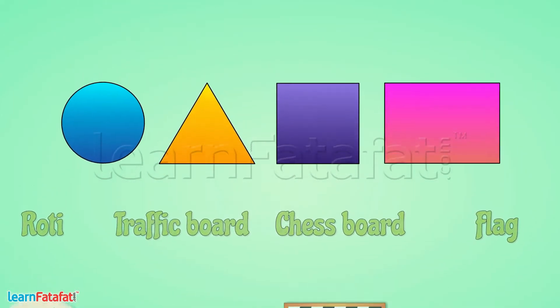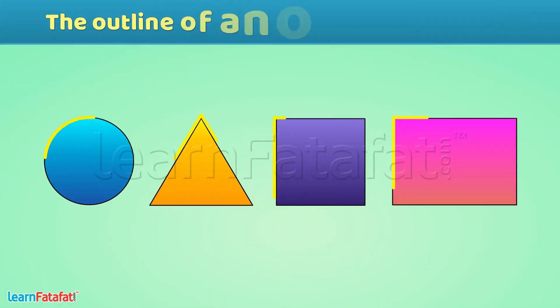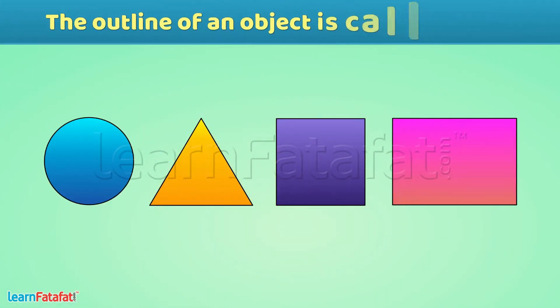Let me tell you — the outline of an object is called its shape.